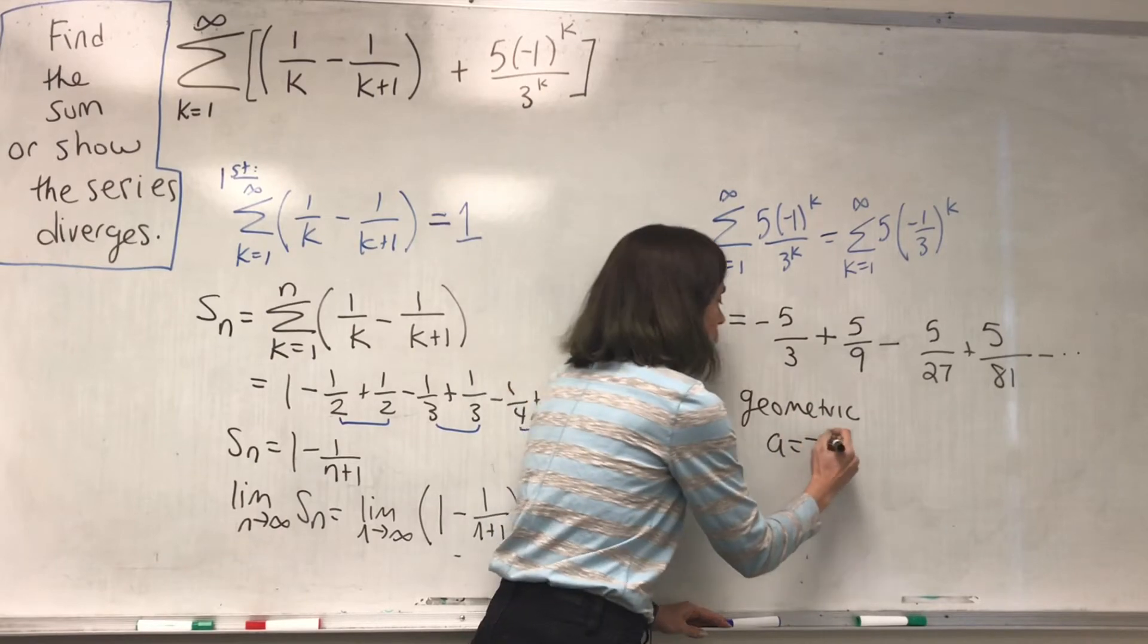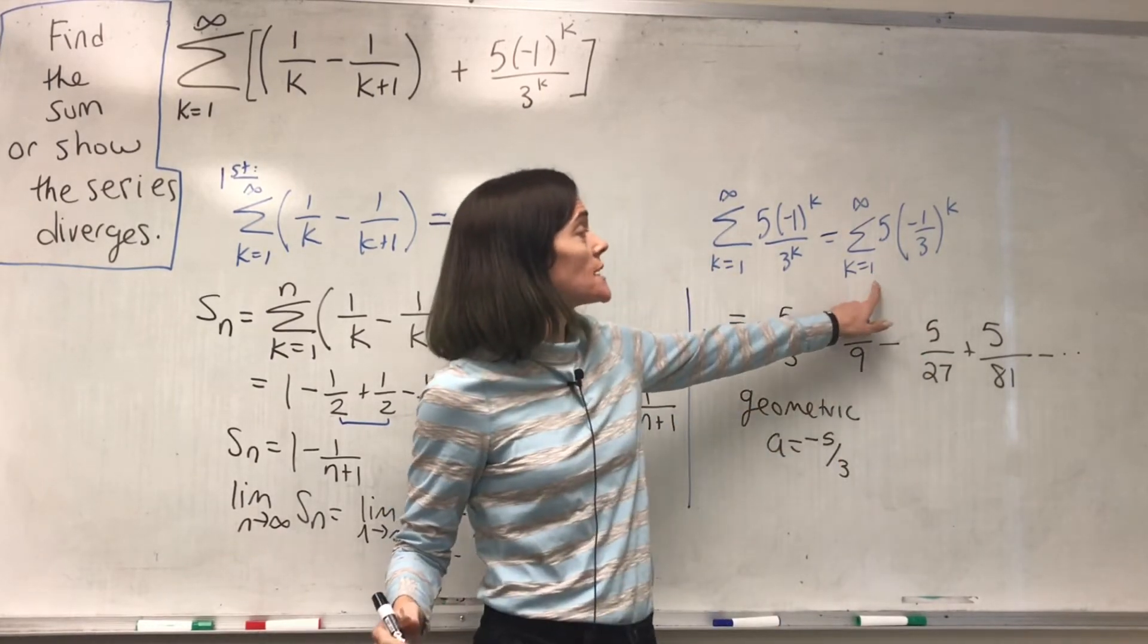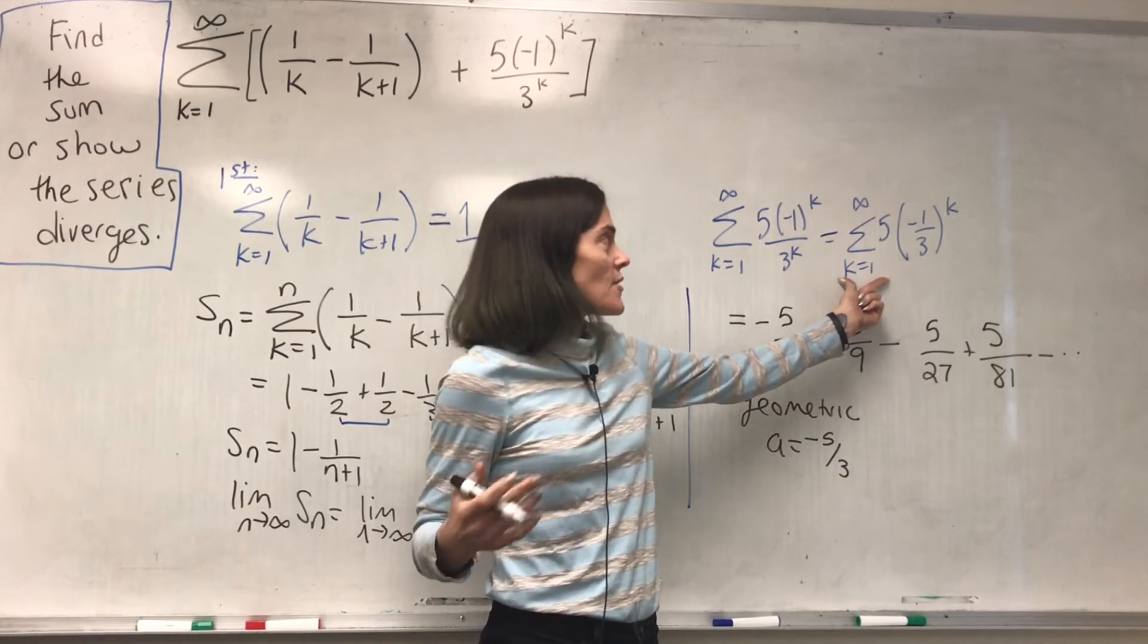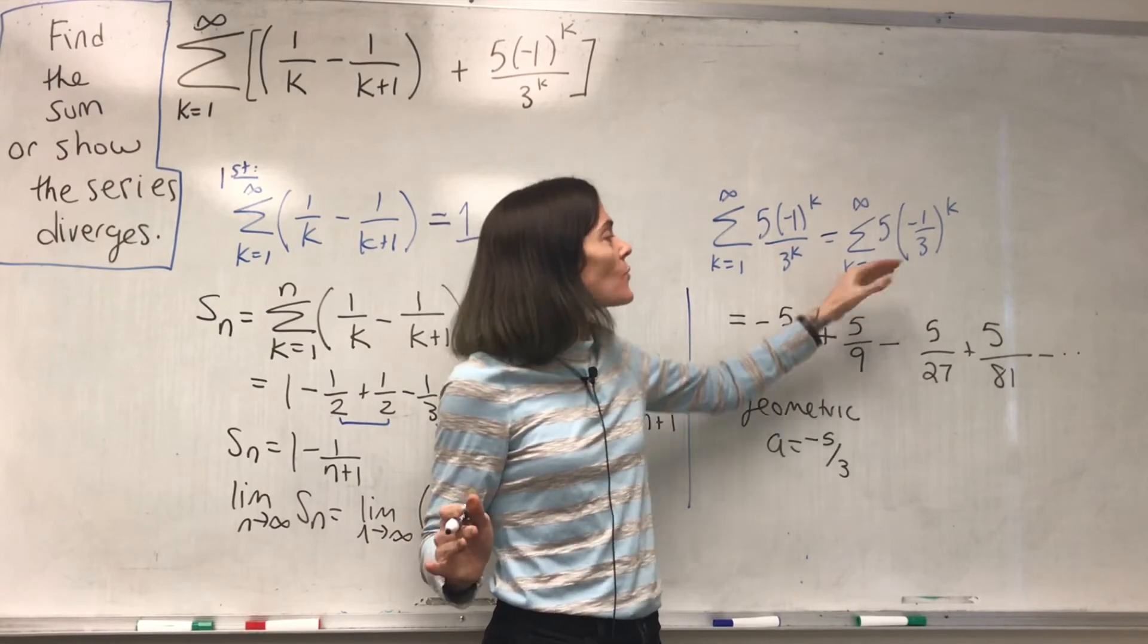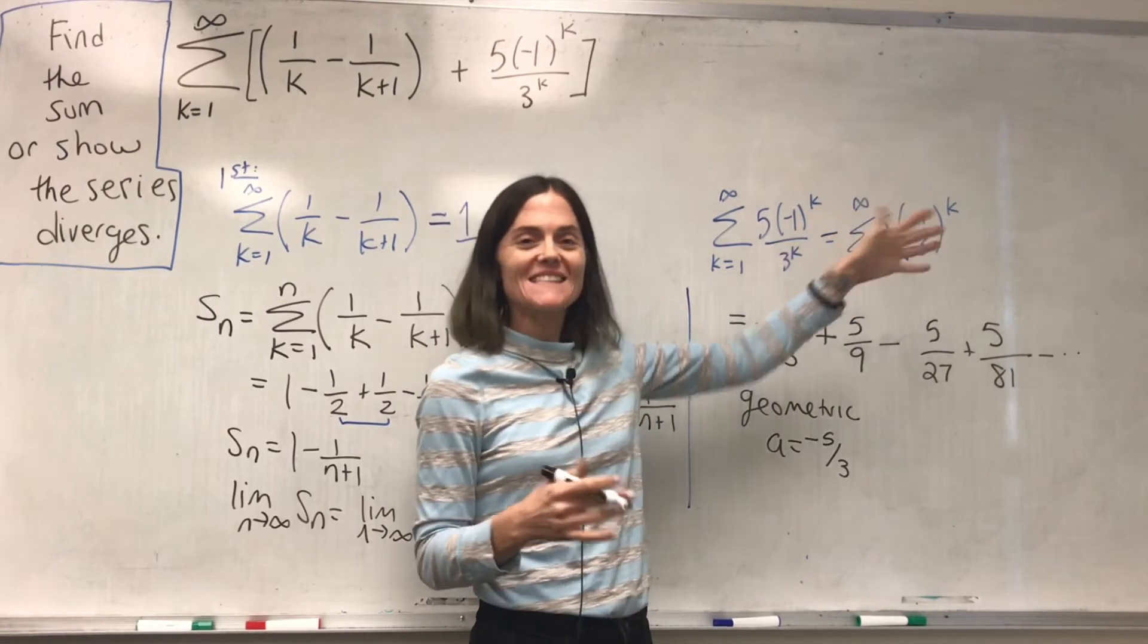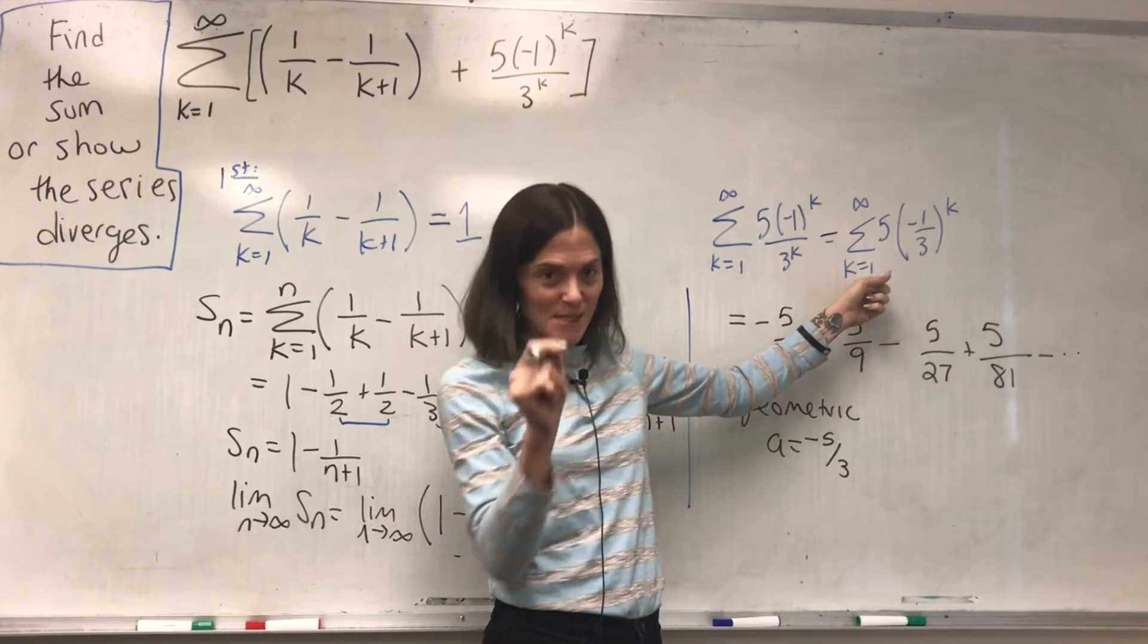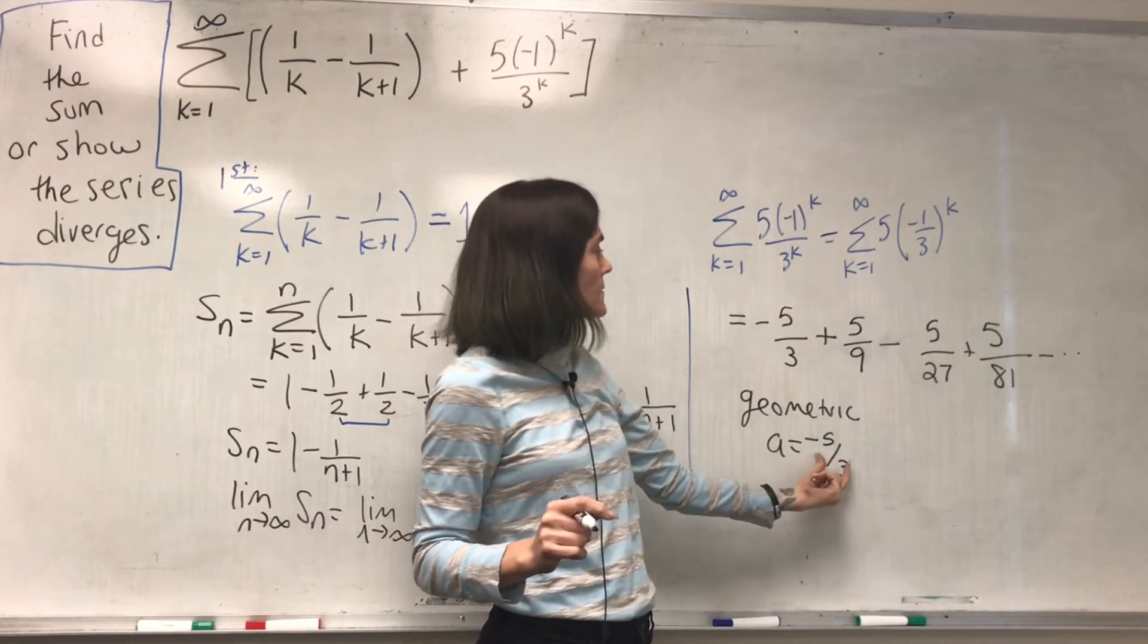And if you didn't write out some of the terms, you would just evaluate at the lowest point that you're adding, which is k equals 1. Or if you started at 4, you would evaluate at 4. Started at 0, evaluate at 0. Whatever the smallest number you're summing over, evaluate. This is the initial term. Negative 5 thirds.